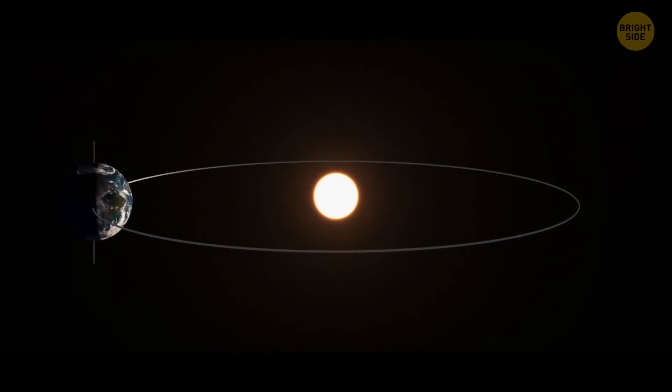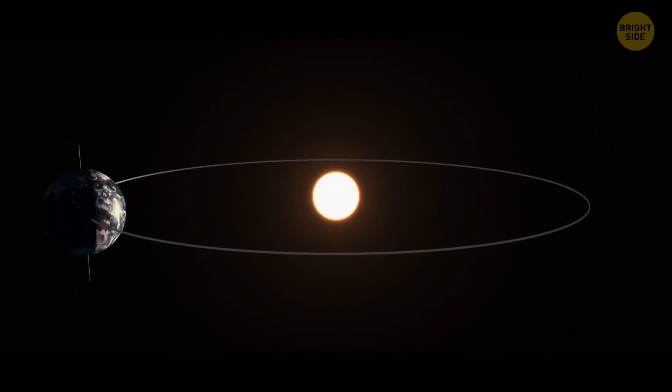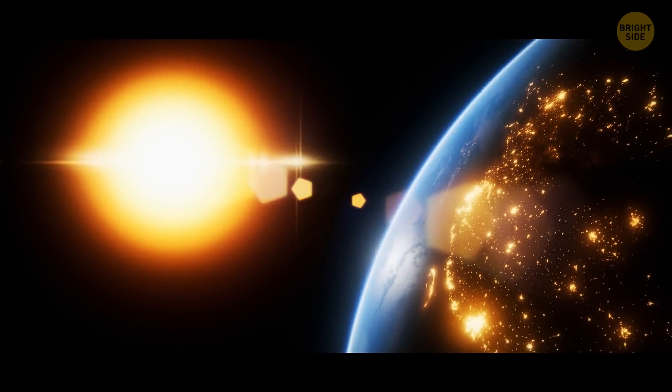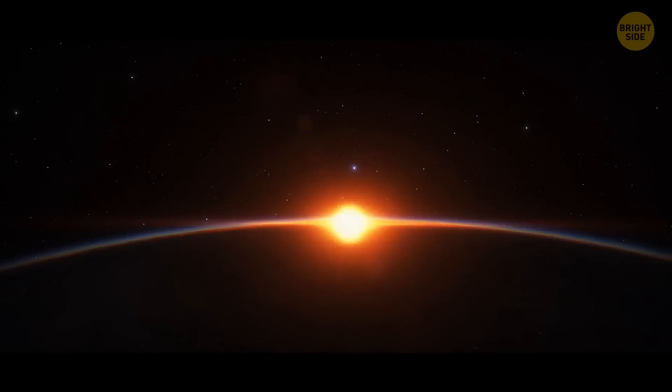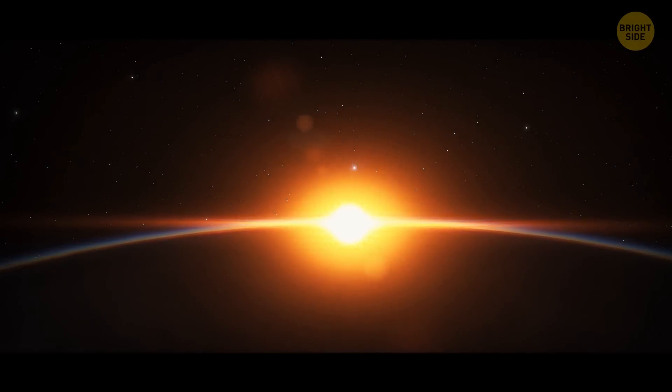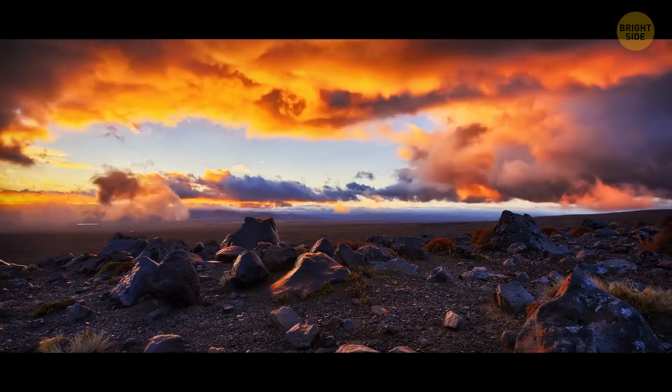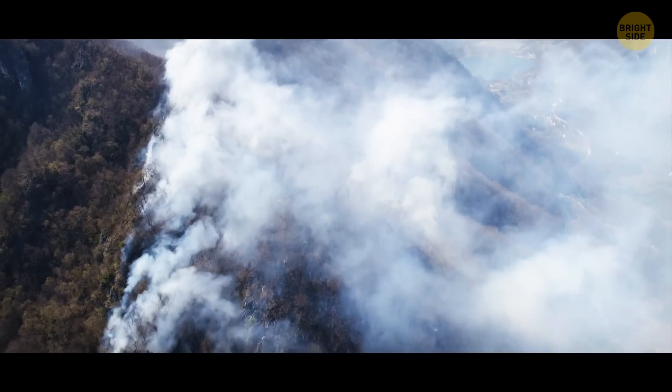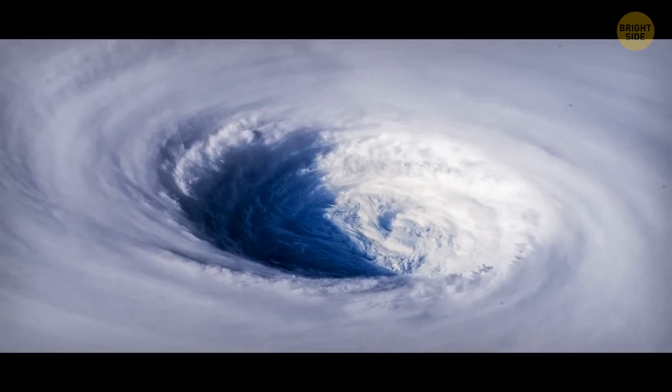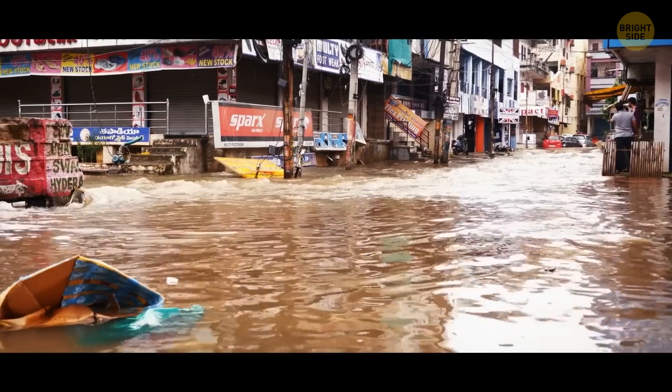Okay, then what if, instead of drifting further away from the Sun, Earth moved closer, with people still aboard? Whoa, the temperatures here are crazy! Too hot to handle! The climate would be getting hotter and hotter. Natural disasters would start to occur more often. Hurricanes and floods would be a common thing on Earth now.